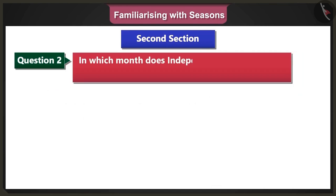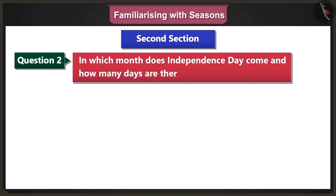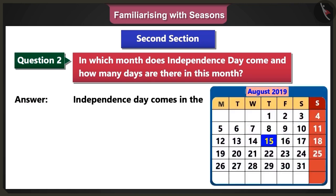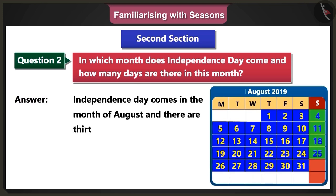Second question: In which month does Independence Day come and how many days are there in this month? Answer: Independence Day comes in the month of August and there are 31 days in this month.